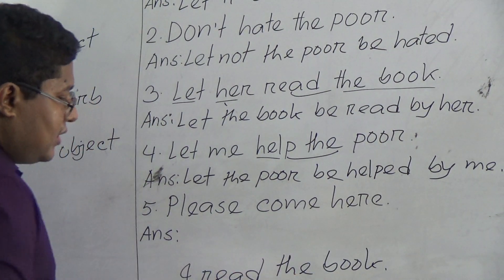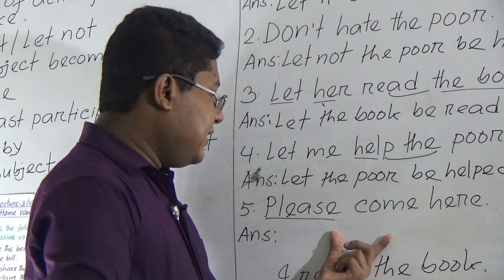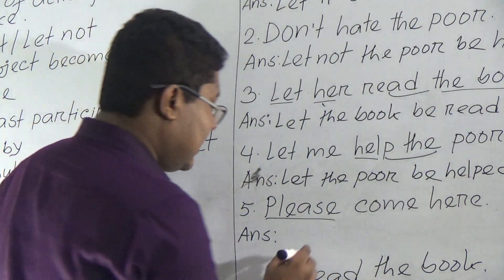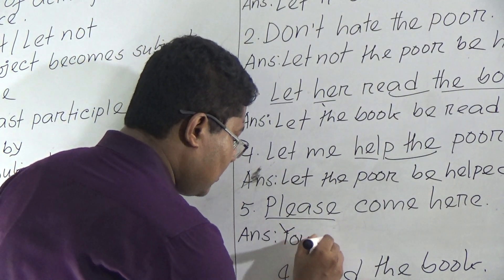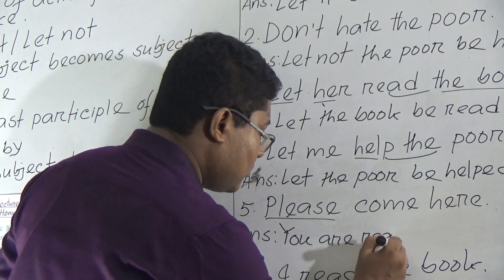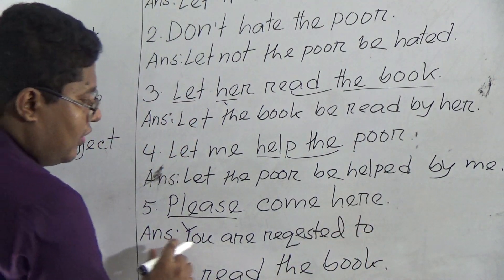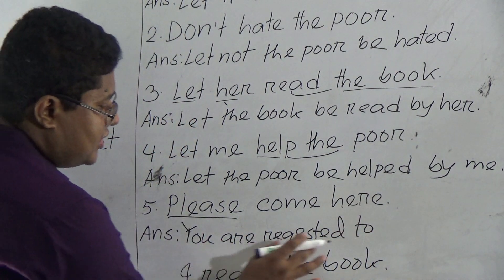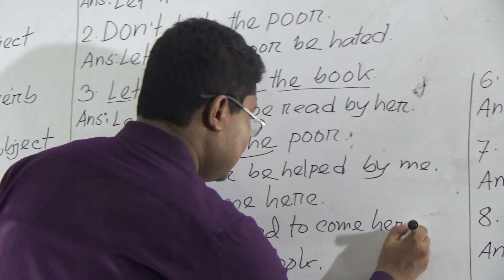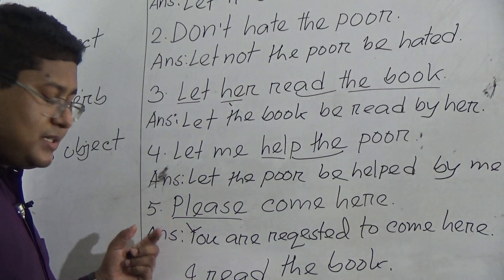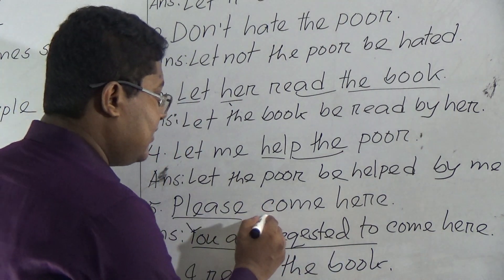Example five: 'Please come here.' This is an exceptional case. If the imperative sentence starts with 'please,' it expresses a request. In this case, we write 'You were requested to' in place of 'please,' then add the rest of the sentence. Result: 'You were requested to come here.' This rule applies whenever the sentence starts with 'please.'